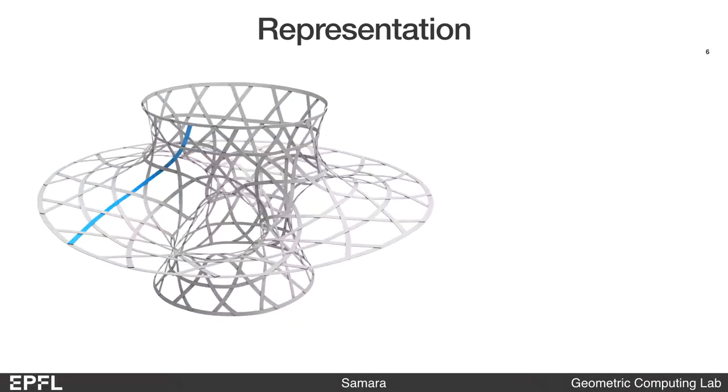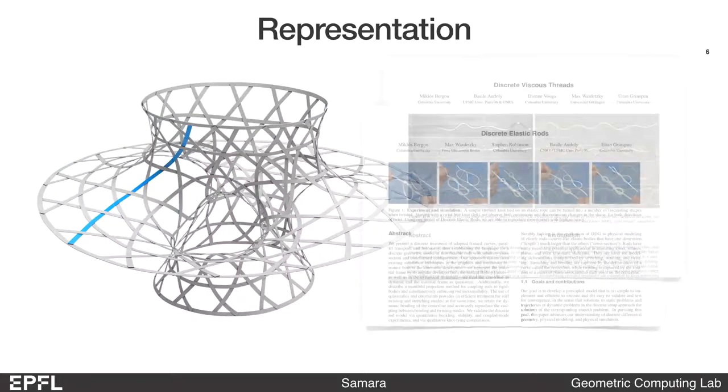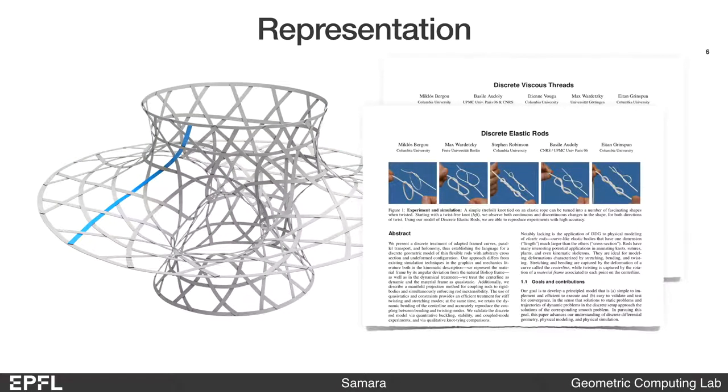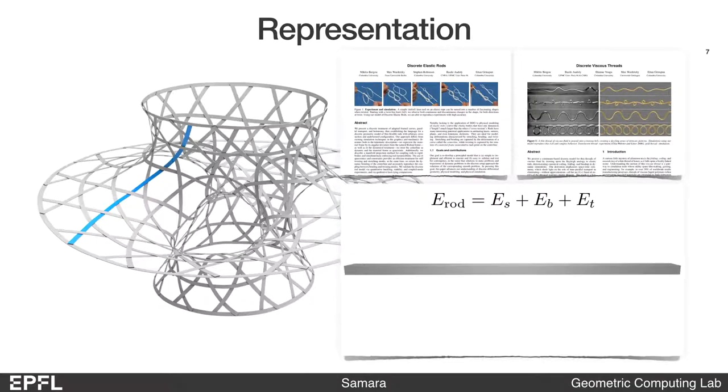To simulate the physical behaviors of the ribbons, we use the popular discrete elastic rods model. Representing the ribbon as a framed polygon curve, the model allows us to efficiently compute the stretching, bending, and twisting energy of the ribbon.